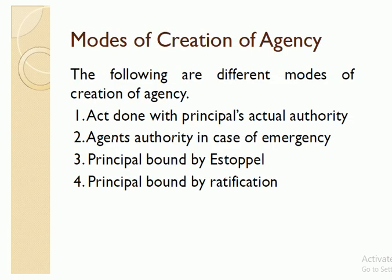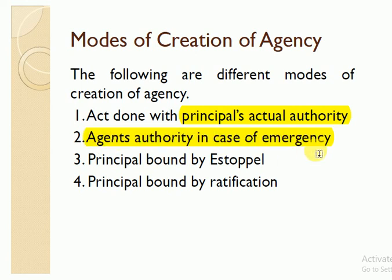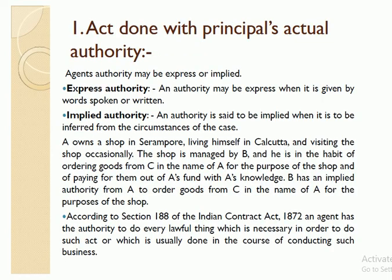This is a very important question — how agency is created. First: act done by the principal's actual authority. Second: agent's authority in case of emergency. Third: principal bound by estoppel. Fourth: principal bound by ratification. Now let's discuss these points one by one.